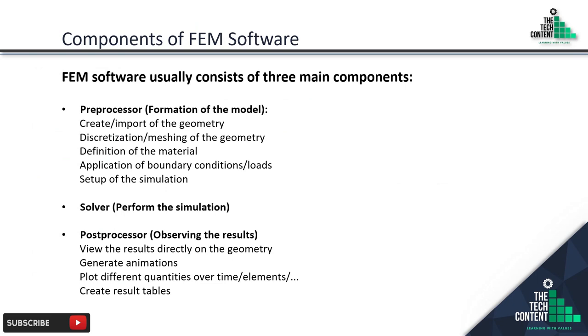The components of FEM software: FEM software usually consists of three main components - preprocessor, solver, and post-processor. In the preprocessor you can create or import geometry, mesh the geometry, define and assign material properties, and apply boundary conditions and loads. The solver performs all calculations at the back end. The post-processor is used to view results directly on the geometry, generate animations, plot quantities over time, or create result tables.